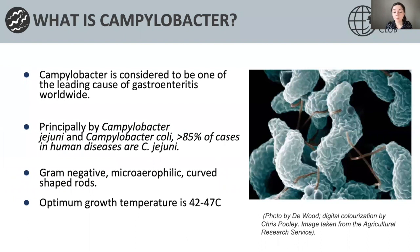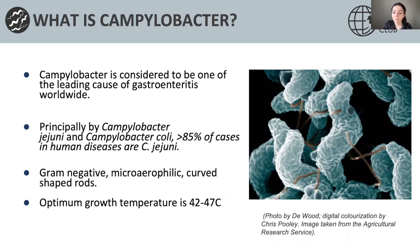So what is Campylobacter? The Campylobacter genus has currently 39 species and 16 subspecies. Campylobacter jejuni and Campylobacter coli are considered to be one of the main causes of gastroenteritis worldwide and they're the main species responsible for incidents of food poisoning. They're both zoonotic pathogens, meaning they can infect humans and they can also infect non-human animals.